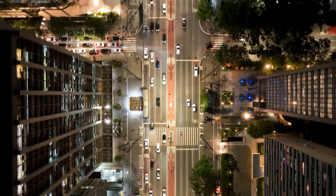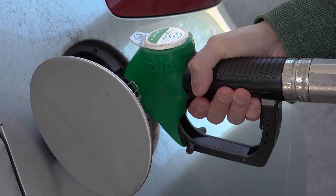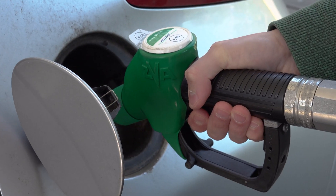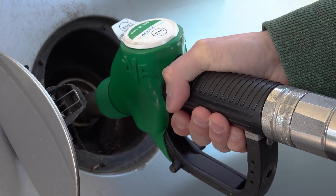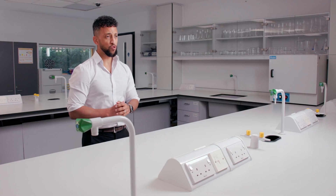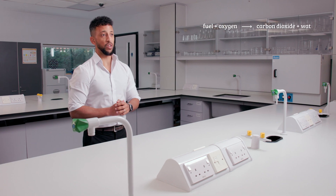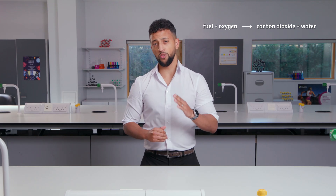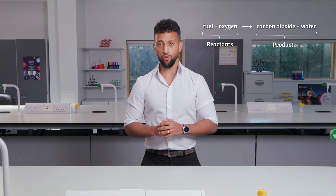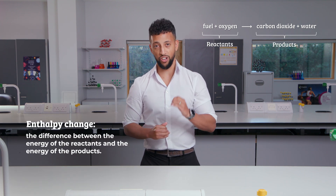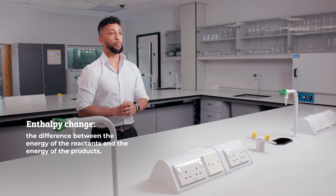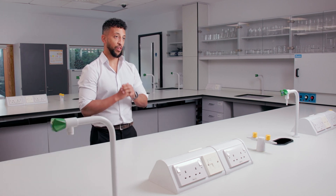Ethanol is an alcohol that we can use as a fuel in cars. In Brazil there are many cars that can run on 100% ethanol. Most cars however use a blend of petrol and ethanol, such as E10 petrol that contains 10% ethanol. Cars use a chemical reaction involving fuel and oxygen to transfer heat energy to the surroundings. The difference between the heat energy of the reactants and the products is known as the enthalpy change. Today we're going to measure the enthalpy change of combustion of ethanol.